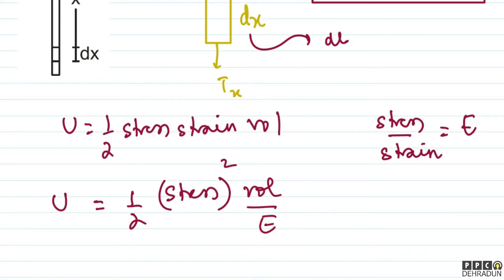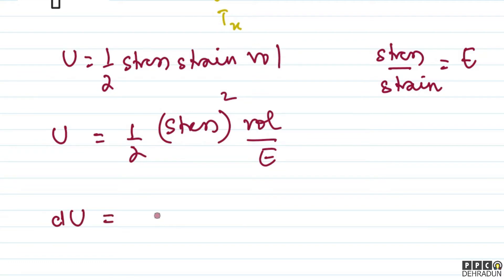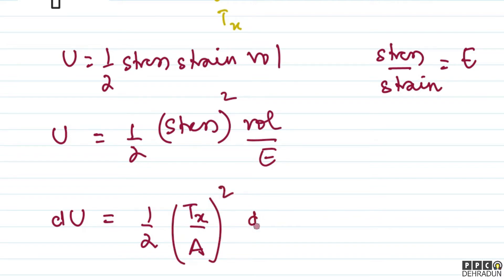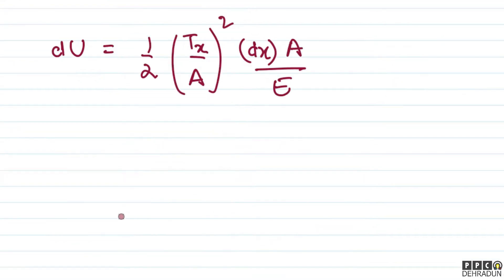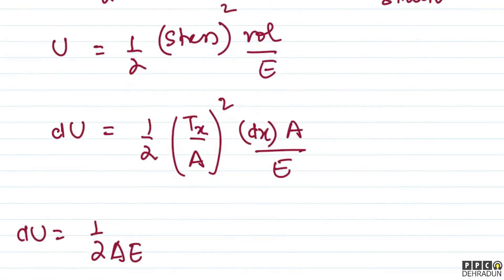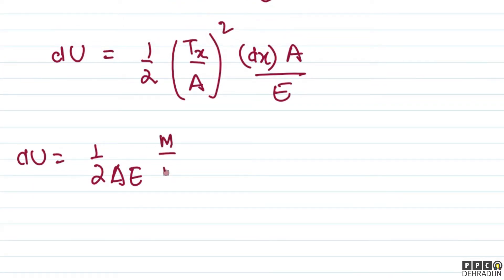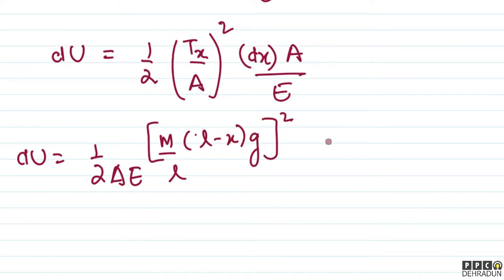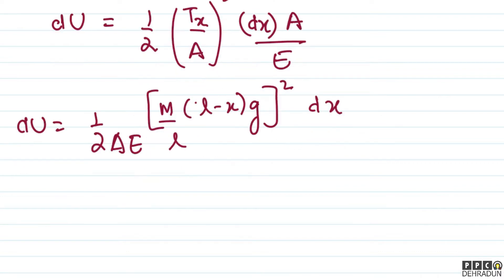Using this formula for the small element: dU = ½ × (Tx / A)² × volume / E, where the volume of the element is A·dx. Substituting Tx = (M/L)(L - x)g, we get dU = ½ × [M/L × (L - x) × g]² × dx / (A·E).